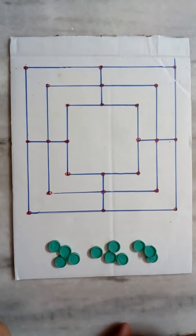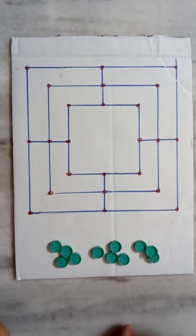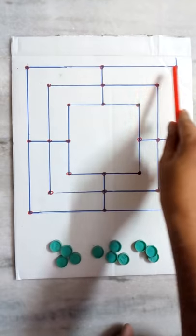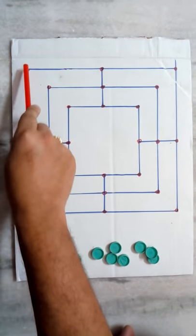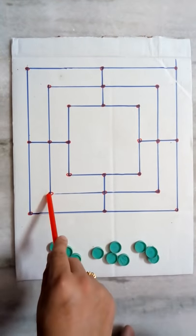Today let's see how to play the daddy game. Daddy means attack. First, how to draw this board. We have to draw a square like this, and then we have to draw one more square with a length less than the previous one.